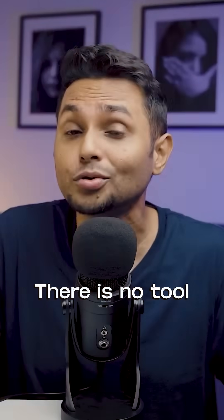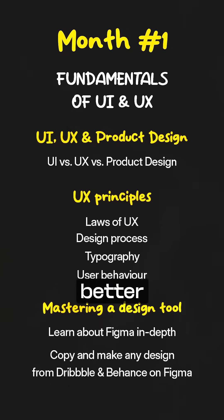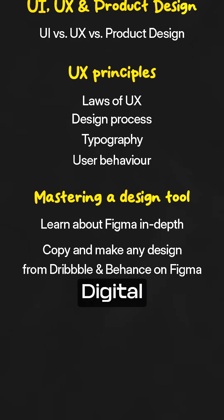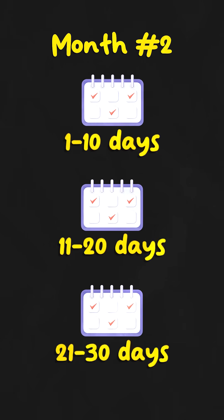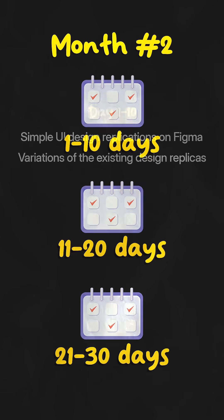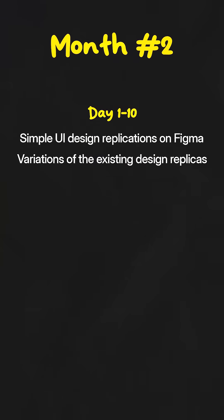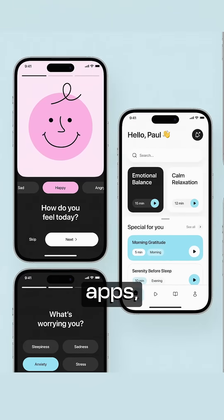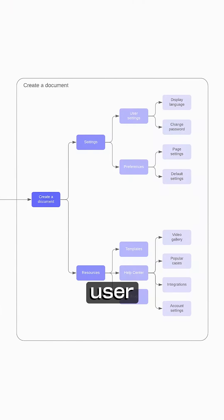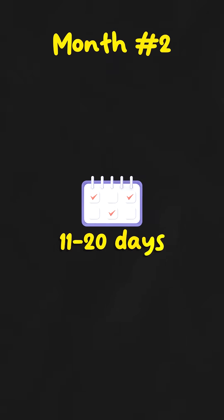There is no tool right now which is better than Figma for digital interface design. Month 2 — you can divide this month into three parts of 10 days each. Start by replicating more complicated designs such as mobile apps, websites, and user flows.